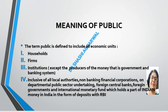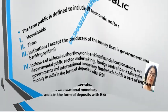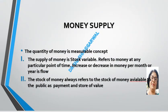The term 'public' also includes local authorities, non-banking financial corporations, non-departmental public sector undertakings, foreign central banks, foreign governments, and the IMF, which hold part of Indian money as deposits with the RBI. Money supply is a measurable stock variable — it refers to money at a particular point of time. If there is an increase or decrease monthly or yearly, that is a flow.